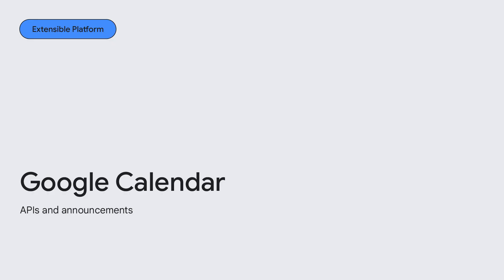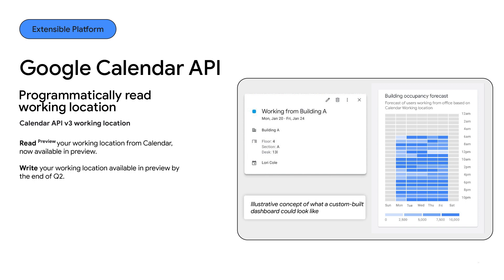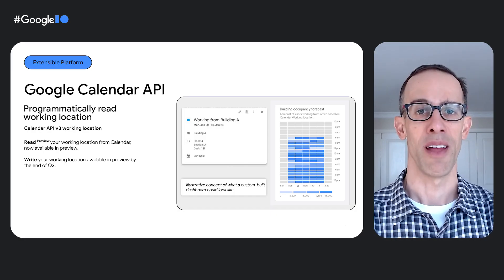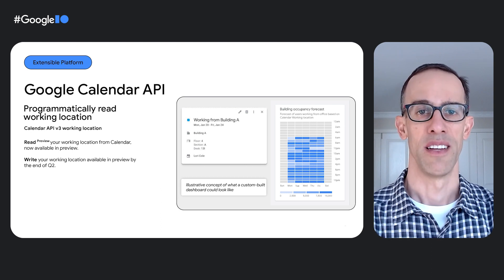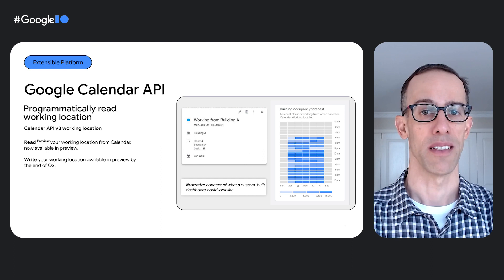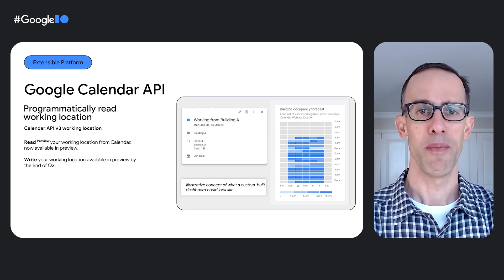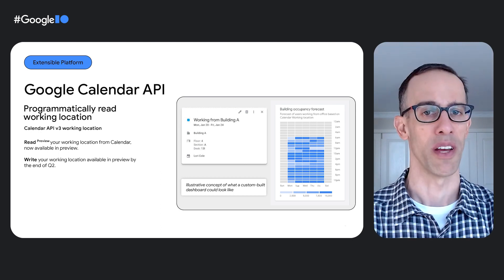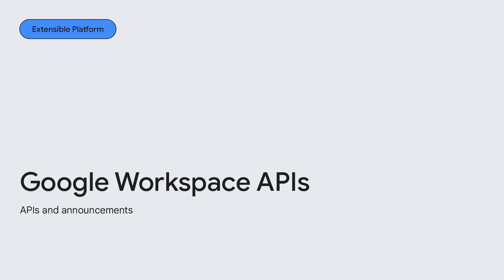Now let's see what's new with Google Calendar. We added working location to Google Calendar a while back and received lots of interest from customers and developers for the feature to be available via API. Today, we are pleased to announce that the Calendar API working location is available in preview. With the API, developers can synchronize with third-party tools like desk booking applications or resource management tools, and surface working location information to coordinate in-office days or plan meetings with on-location colleagues.